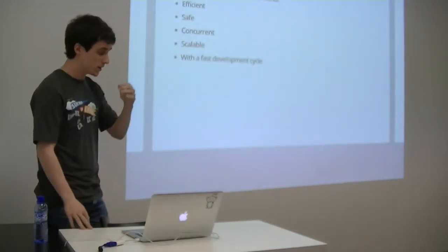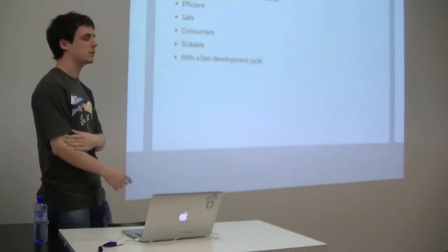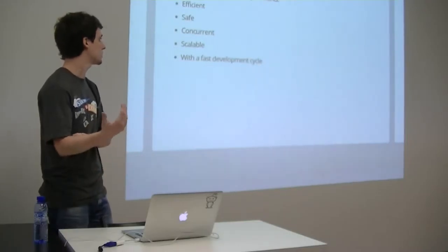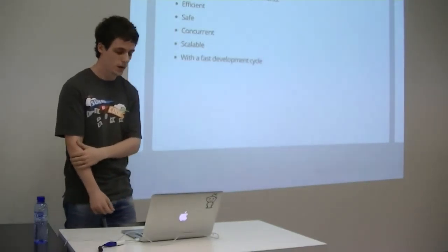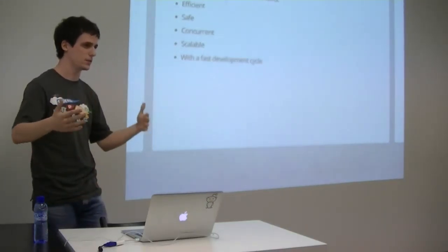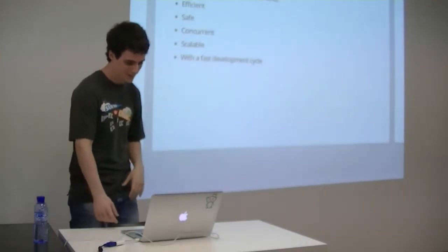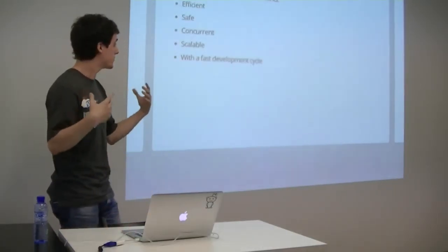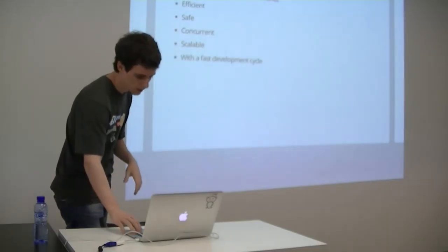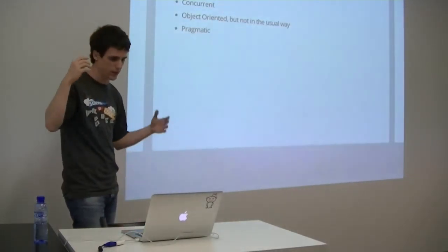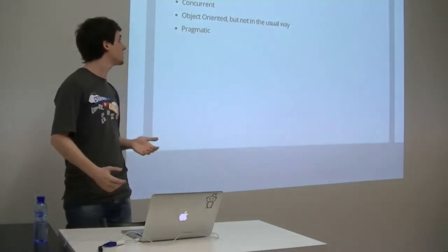What is Go? Go was started by some engineers at Google. They had requirements: the language had to be efficient, safe, concurrent, and scalable, with a fast development cycle. People with large C++ codebases that take forever to compile can feel the pain. So it had to be fast in the development cycle, but also scalable, safe, efficient, and concurrent. They geared towards a design that is lightweight, concurrent, and object-oriented — but not in the usual way.